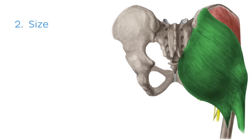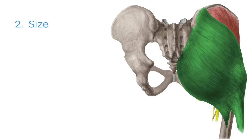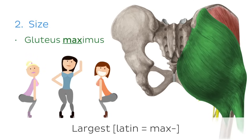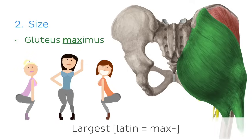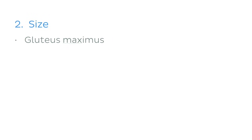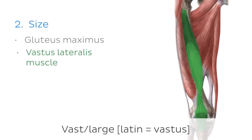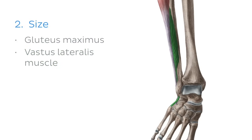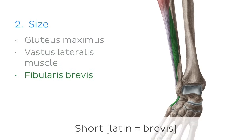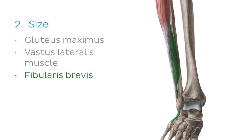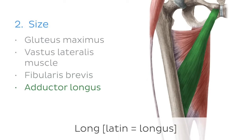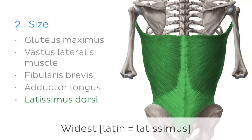Our second characteristic determining muscle names is their size. Yes, there is a reason your butt is called your gluteus maximus — it's the largest muscle of the body. Other examples include the vastus lateralis muscle, the fibularis brevis, the adductor longus, or the latissimus dorsi muscle.